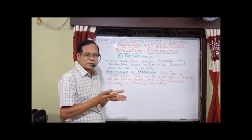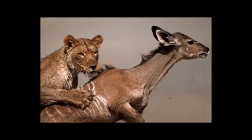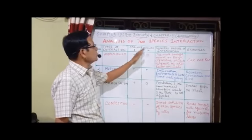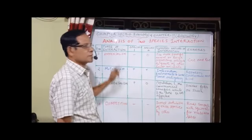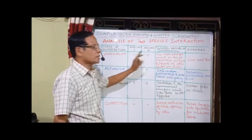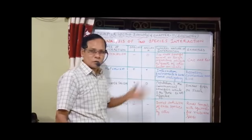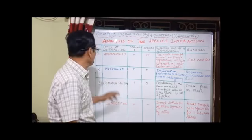Now let us collectively do the analysis of two-species interactions that we have studied so far in the form of a table. There are six different types of interactions. Number one, amensalism: we are taking two species — one has a loss and there is no loss or gain for the other partner. The more powerful or larger organism impedes the growth of other smaller animals. For example, the grass and other small plants being destroyed by the foot of an elephant.